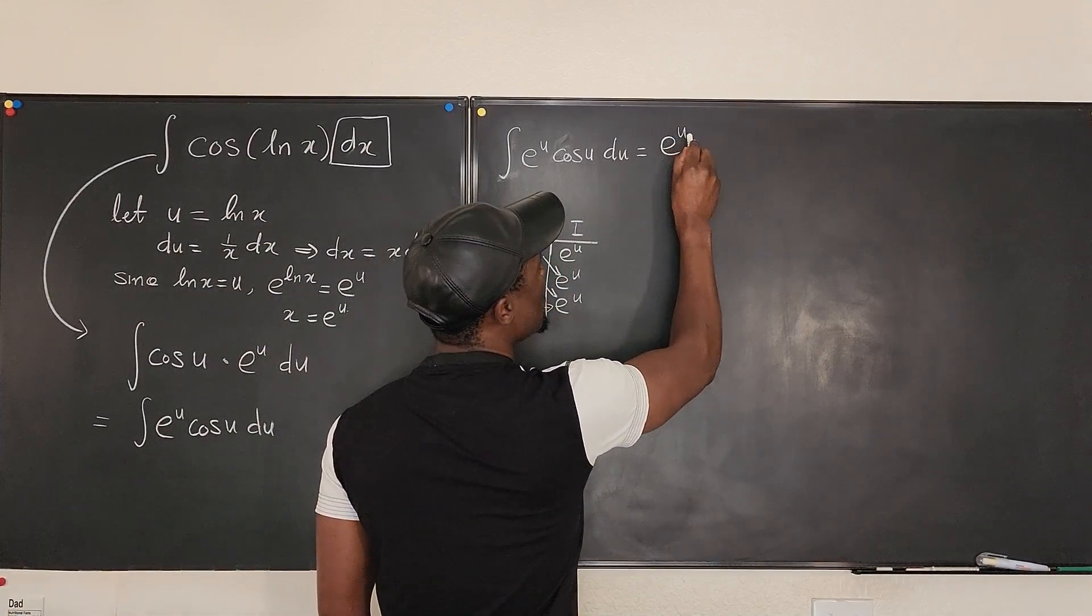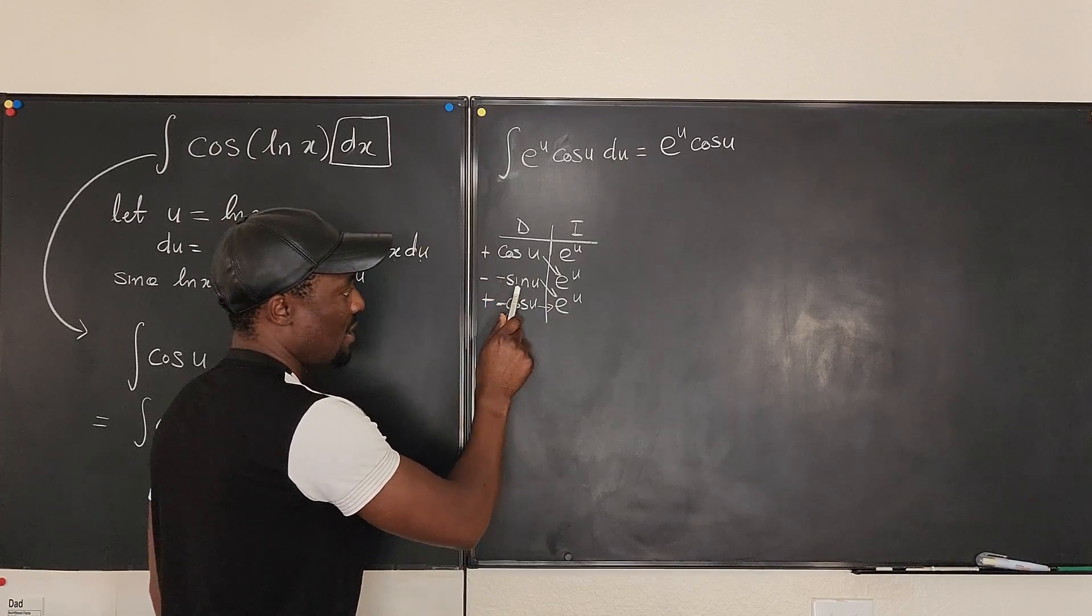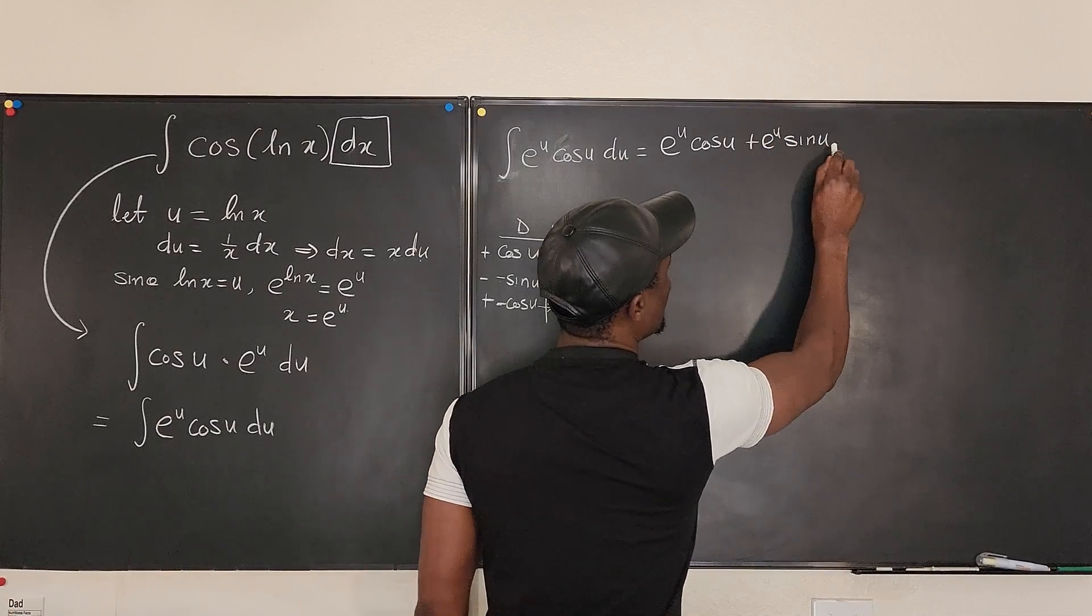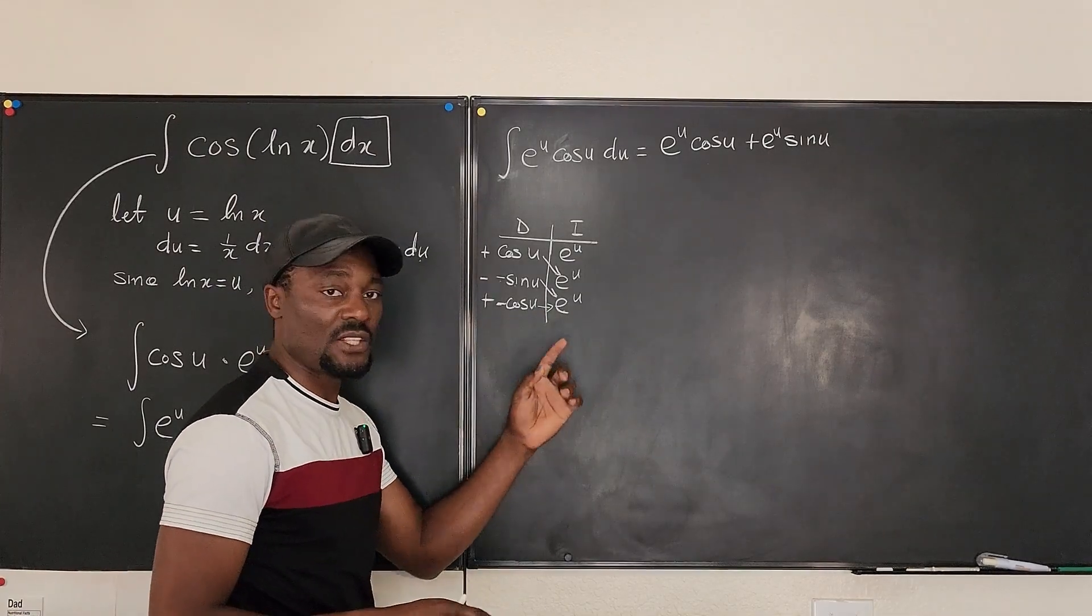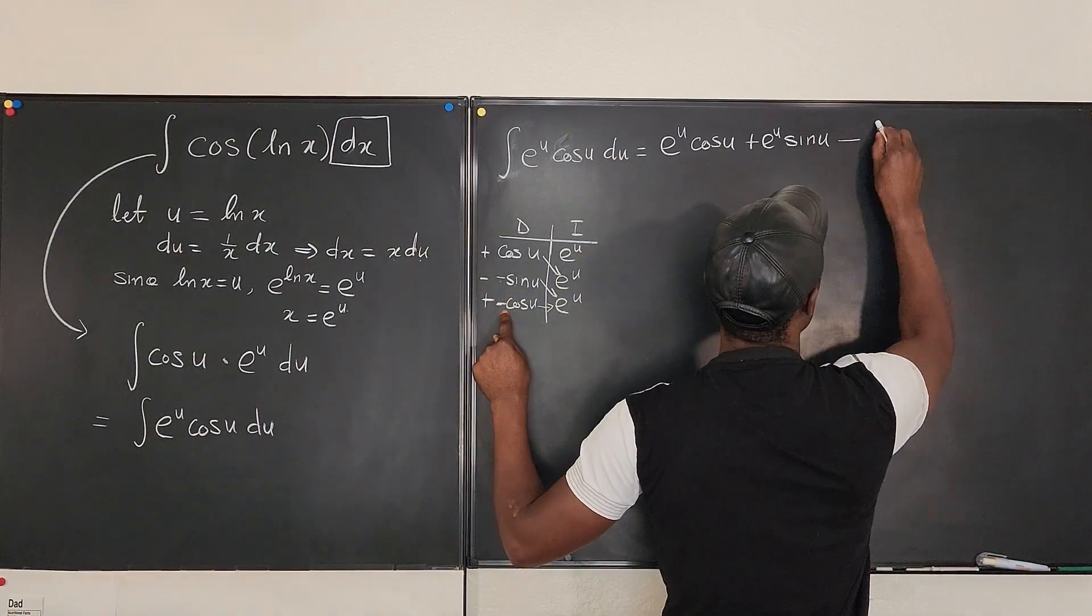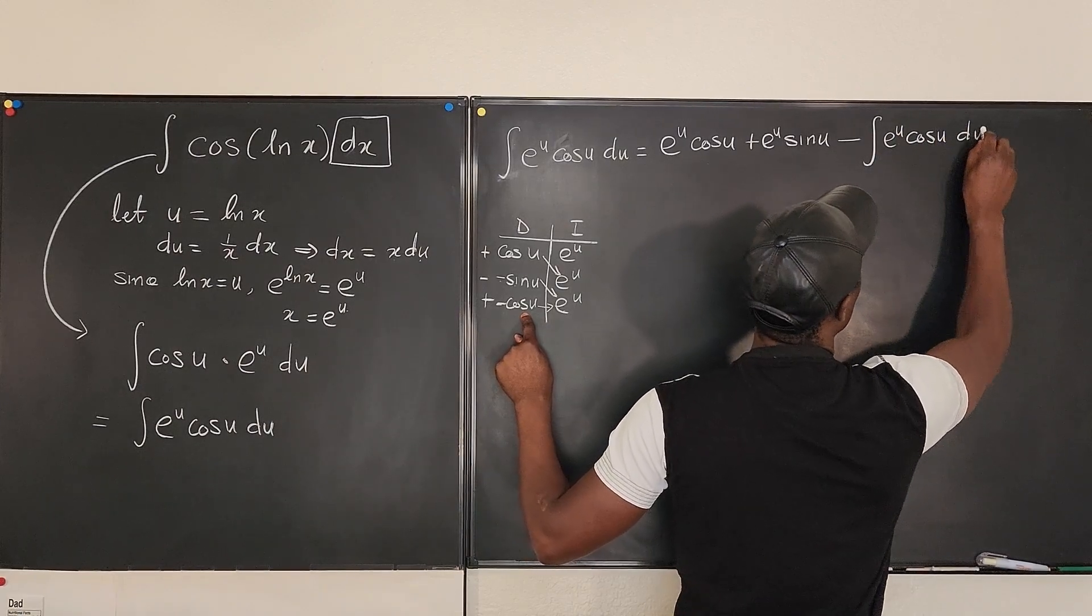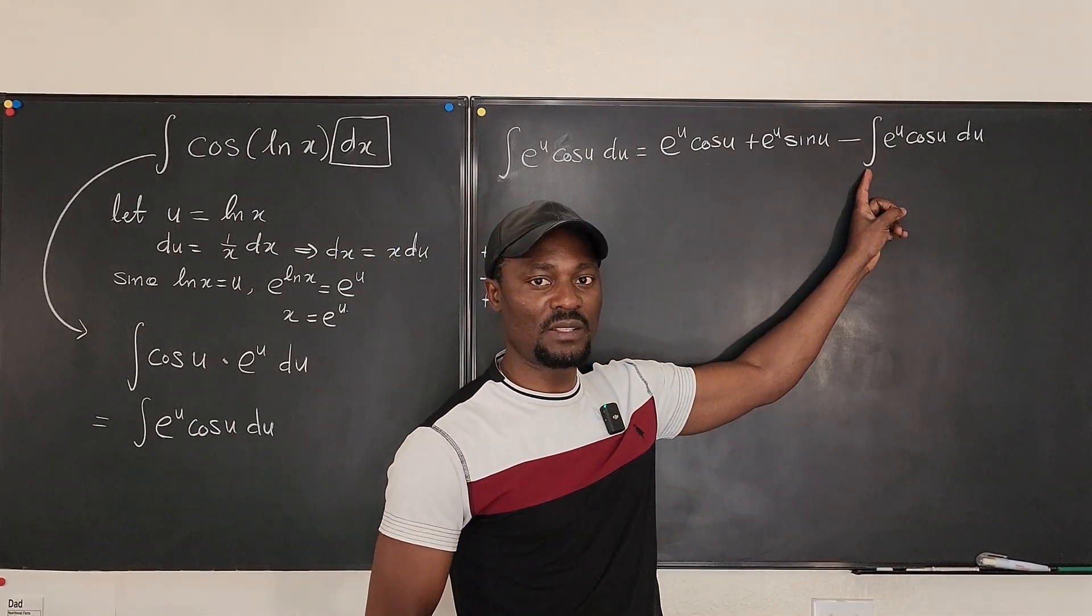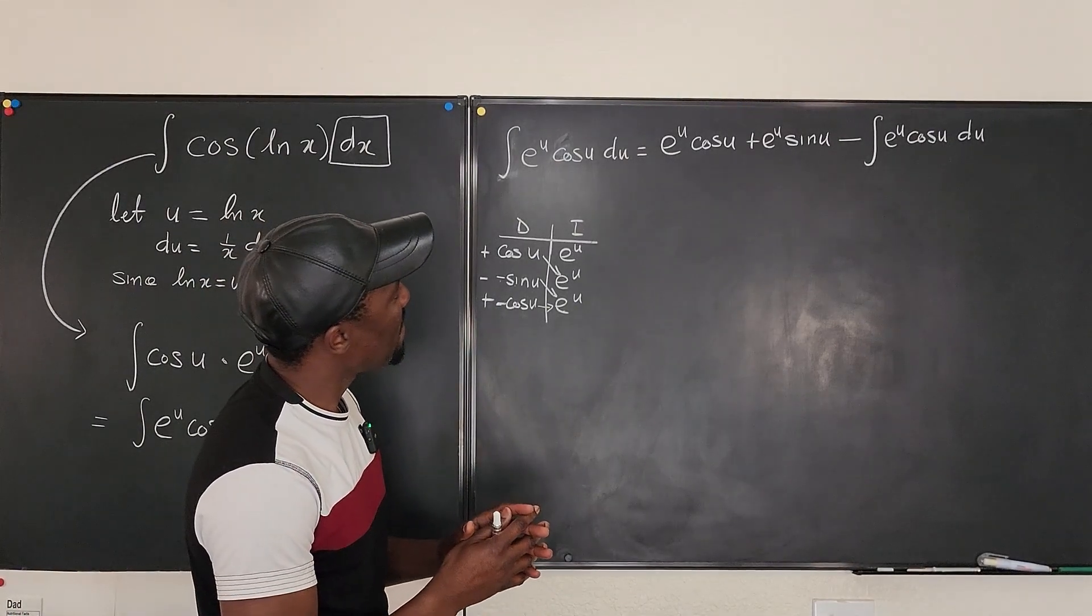So now I'm going to say this is e to the u times cosine u with a plus sign. So this is e to the u cosine u. And then I go to the next one: minus times minus is plus, then sine u times e to the u will be plus e to the u sine u. Okay, and then the last one is going to carry the integration sign because we didn't get to zero and we're going horizontally. So this is going to be plus times minus is minus, then you have the integral sign of e to the u times cosine u du. So every time you multiply horizontally, it must be integrated. Okay, and make sure you note what sign this is.